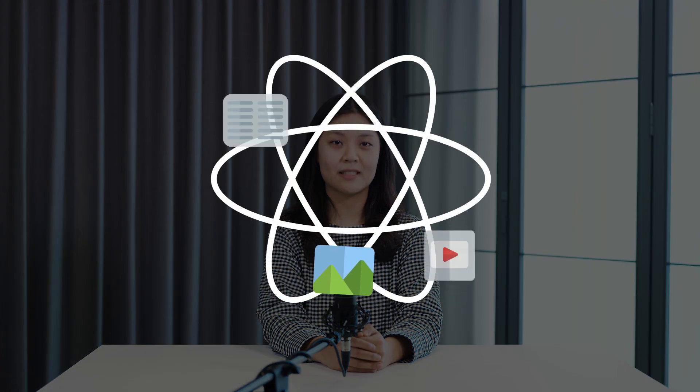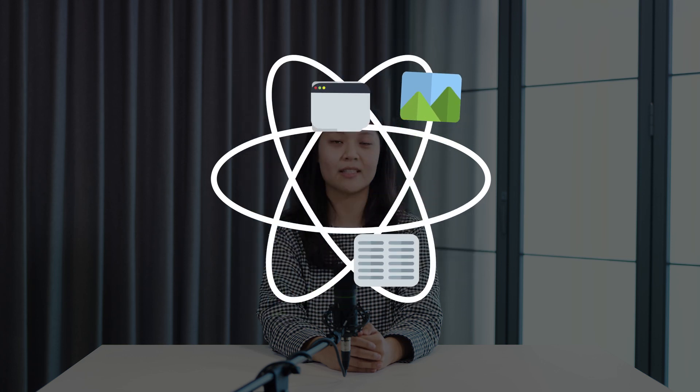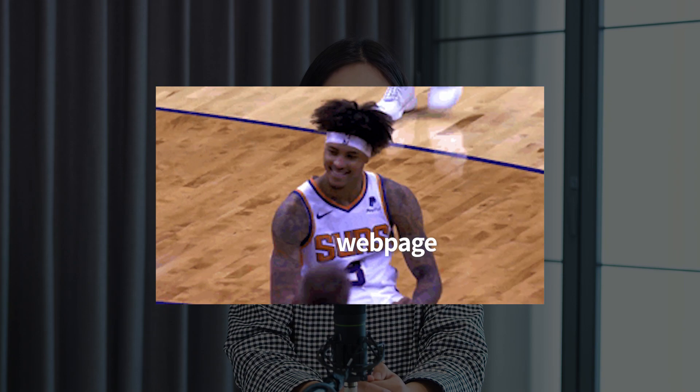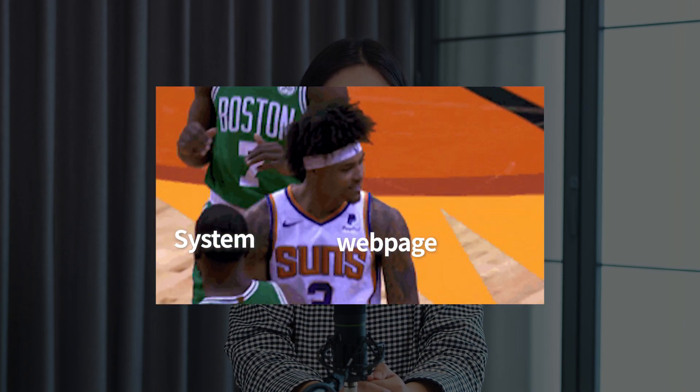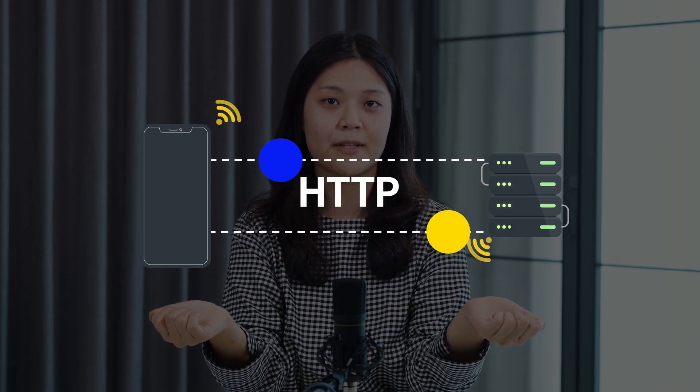The last one is Server. A web server is a system that delivers content or services to end users over the internet. In other words, it's a system used to support web pages. A server is a host that serves a web page through HTML files. You can simply think of their relationship as a host and a client — the server serves web pages through HTML files to the client, and they communicate through the network called HTTP using a specific URL.